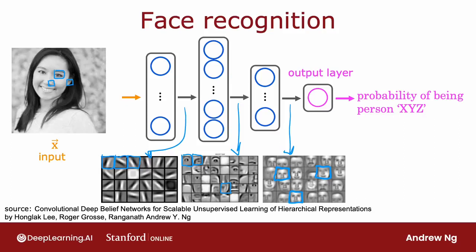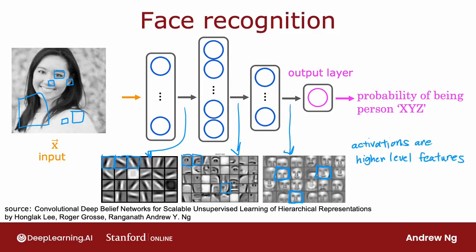A remarkable thing about the neural network is it can learn these feature detectors at the different hidden layers all by itself. In this example, no one ever told it to look for short little edges in the first layer, and eyes and noses and face parts in the second layer, and then more complete face shapes at the third hidden layer — the neural network is able to figure out these things all by itself from data. Just one note: in this visualization, the neurons in the first hidden layer are shown looking at relatively small windows to look for edges, then the second hidden layer is looking at a bigger window, and the third hidden layer is looking at an even bigger window, so these neuron visualizations correspond to differently sized regions in the image.